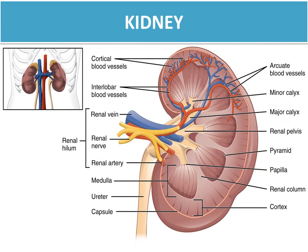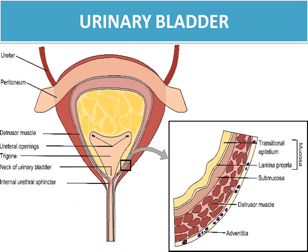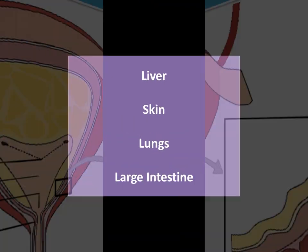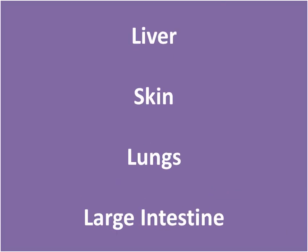The excretory system has basically three major parts or organs. The first is the kidney — there are two kidneys in the human body and they are biconcave in shape. The second major part is the urinary bladder, where urine is stored in the human body. The third is the urethra, from where urine is expelled out of the body. Other excretory organs include the liver, skin, lungs, and large intestine.